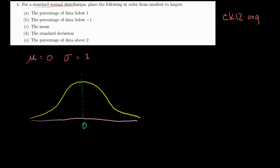The standard deviation is 1. So if we go one standard deviation to the right, that is going to be 1. Two standard deviations is 2, three standard deviations is 3. One standard deviation to the left is going to be minus 1, two standard deviations to the left will be minus 2, and minus 3 will be three standard deviations left, because the standard deviation is 1.